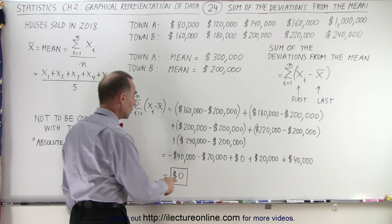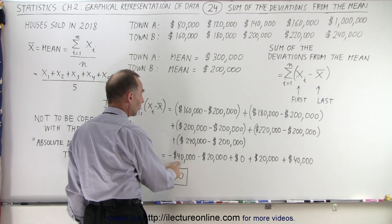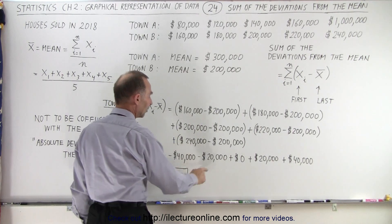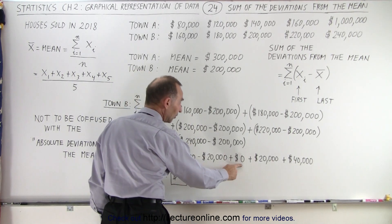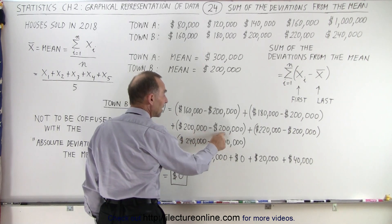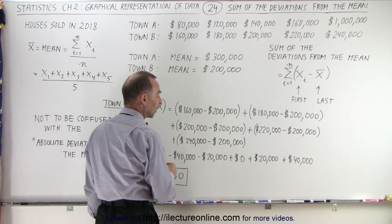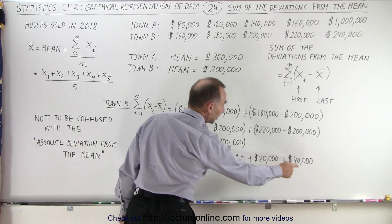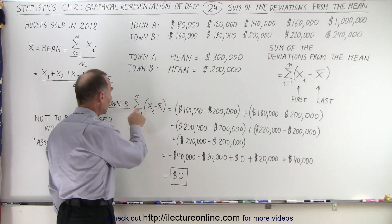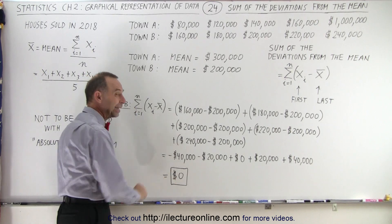When we do that we get the following. We get a negative $40,000 because the price of the house was less than the average, negative $40,000, negative $20,000, zero because in this case the actual house price was the same as the average or mean house price. Here we have a positive $20,000, a positive $40,000. When we sum them all up, that's what that symbol says, we have to sum them all up, we get zero.